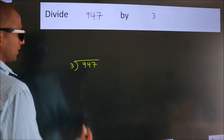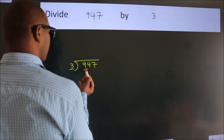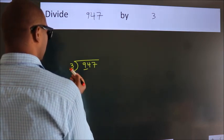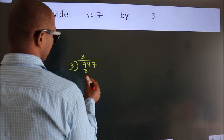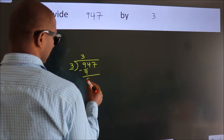Next. Here we have 9, here 3. When do we get 9? In 3 table. 3 times 3 is 9. Now we should subtract. We get 0.